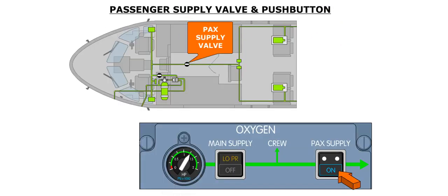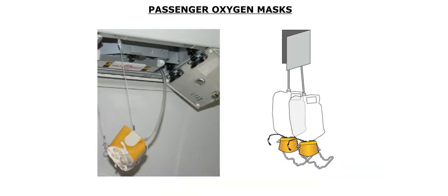Oxygen is distributed to the passenger oxygen system by opening the passenger supply valve. This valve is opened when the passenger supply push button is in. When the passenger supply valve is open, the on light in the push button illuminates blue. Oxygen is distributed to the passengers through oxygen masks located below the cabin overhead bins, once the passenger supply valve is open.